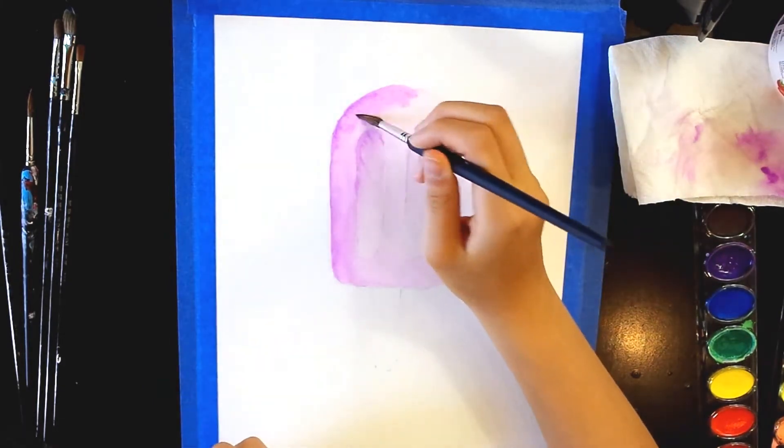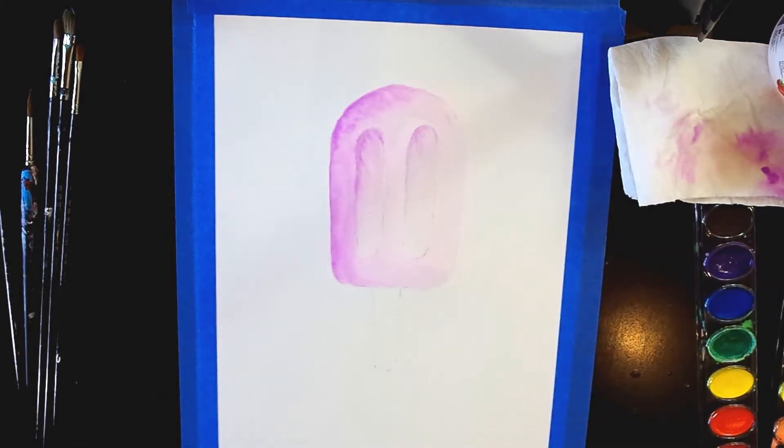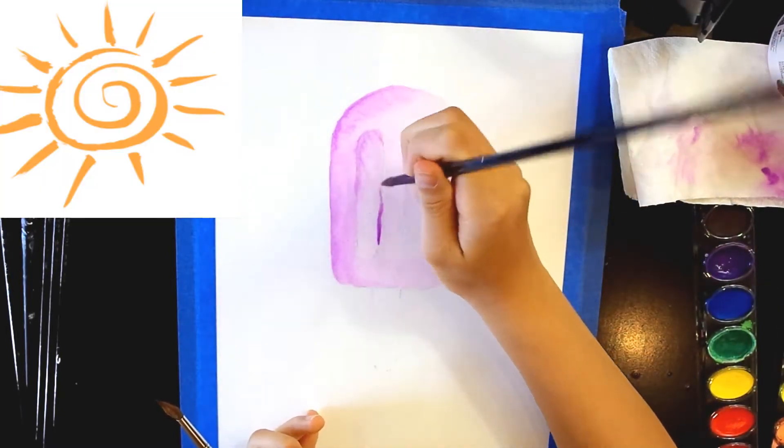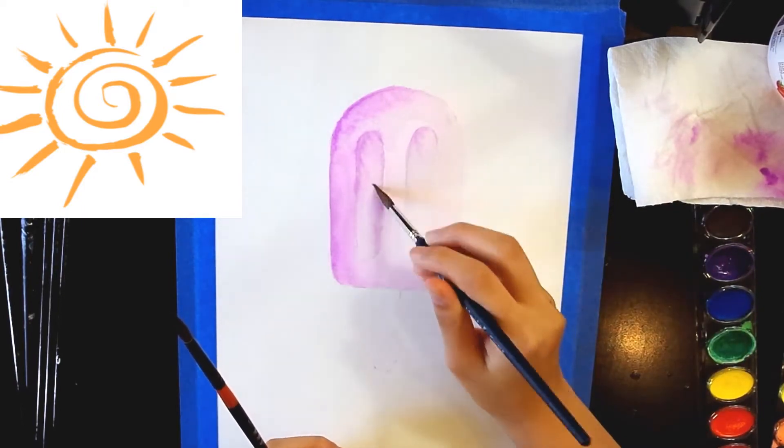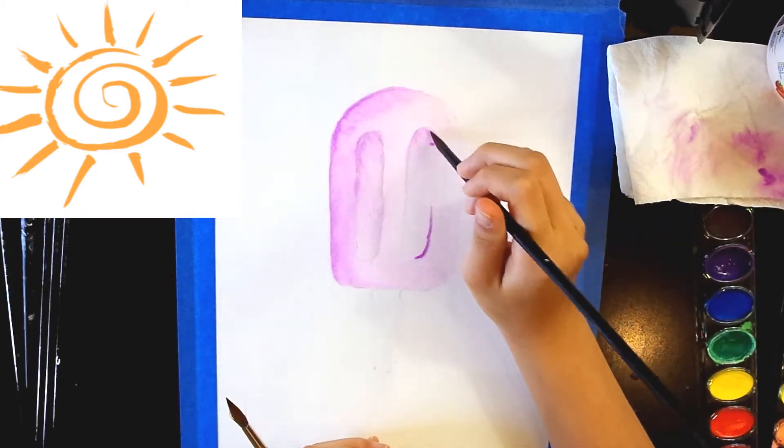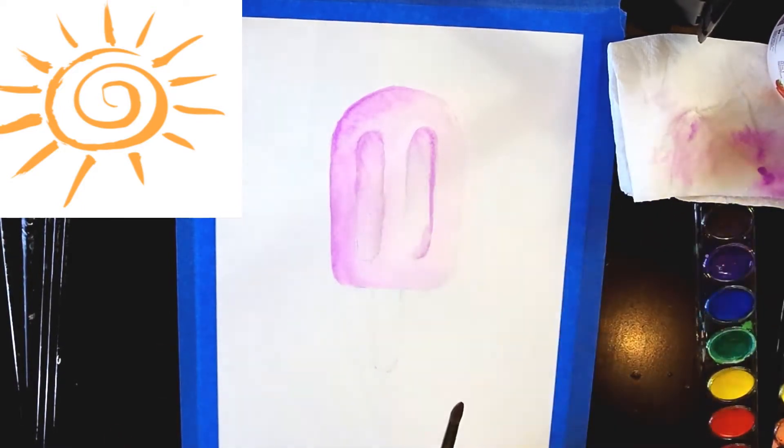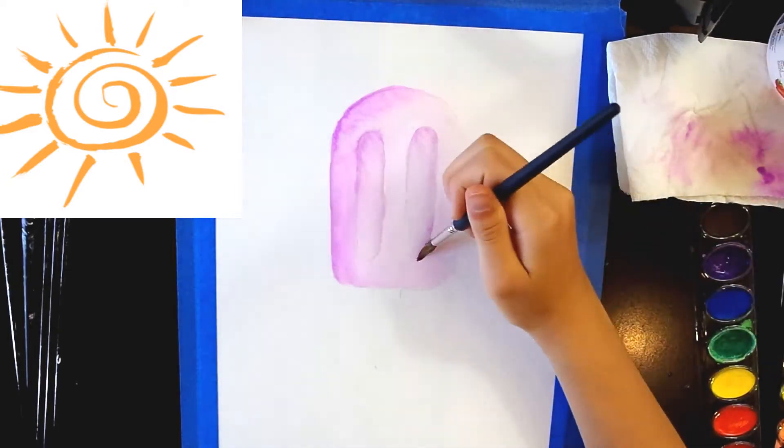Continue adding layers of watercolor, letting it dry after each coat to darken the shadows. In this painting, the sun is coming from the top left. The sun will hit the top of the popsicle on the right side, making it lighter than the rest. This is the highlight. The side closest to the sun would not get any sun, thus creating a shadow.